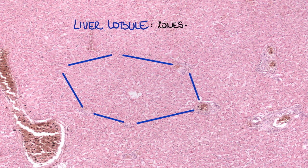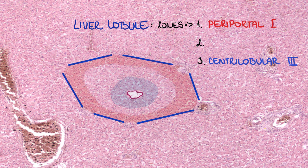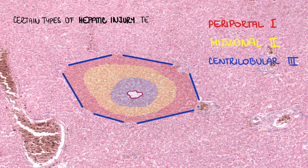From a functional point of view, the liver lobule can be divided into three zones. The zone in close proximity to the central vein is called the centrilobular zone, or zone 3. The zone surrounding the portal tract is periportal, or zone 1. The region in between is referred to as midzonal, or zone 2. Division of the parenchyma into such zones is a useful concept, since certain types of hepatic injury tend to preferentially affect particular zones.